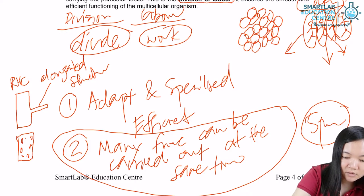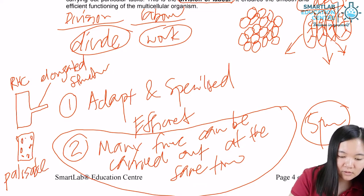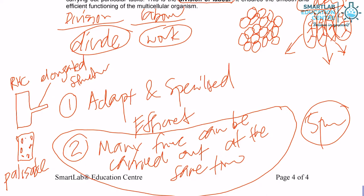This one is your palisade cell. Palisade cells carry out photosynthesis. Palisade cells have a lot of chloroplasts. Root hair cells have elongated structure. So, notice they can adapt and specialize.